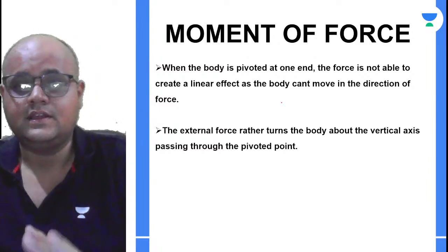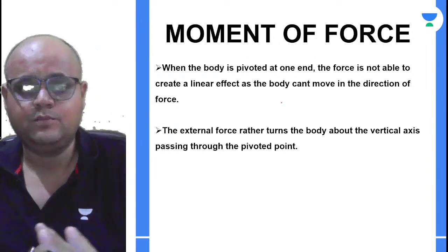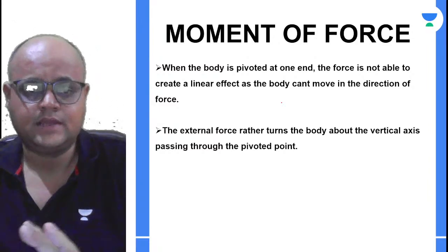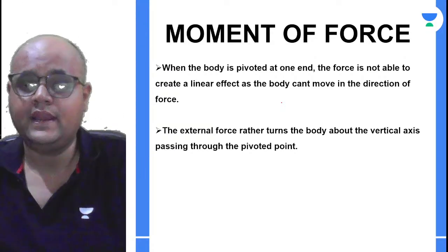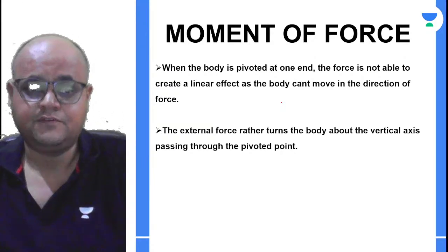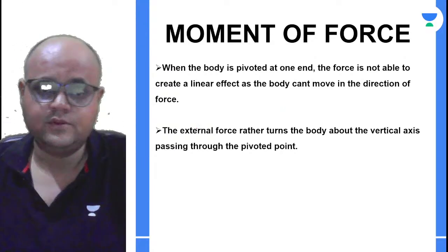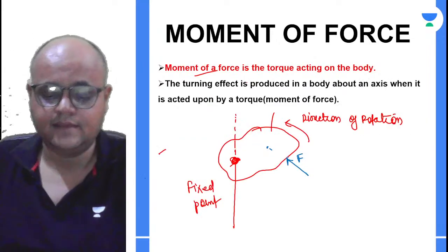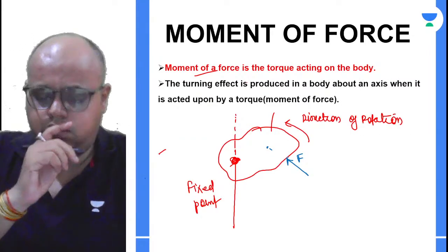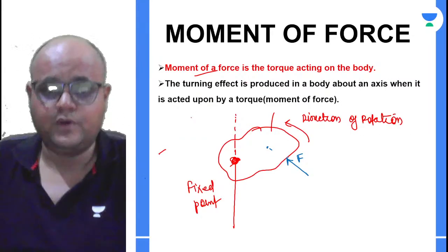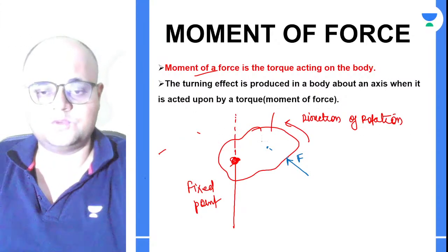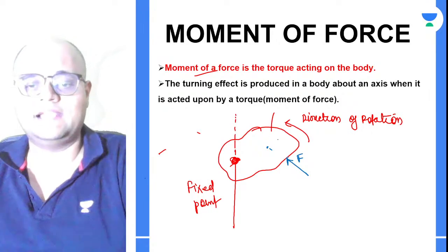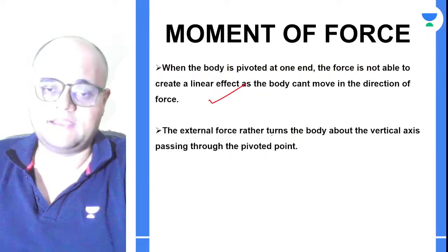Now let's talk about the moment of force. When the body is pivoted at one end, the force is not able to create a linear effect. This end of the body was pivoted, so this force was unable to create a linear effect. What actually happened is that the body started turning about a vertical axis.